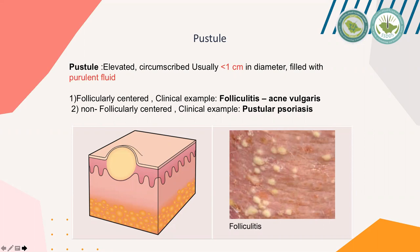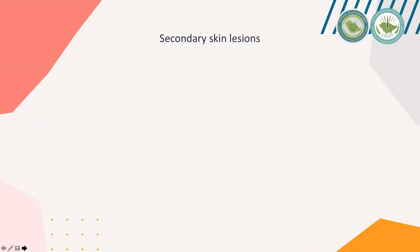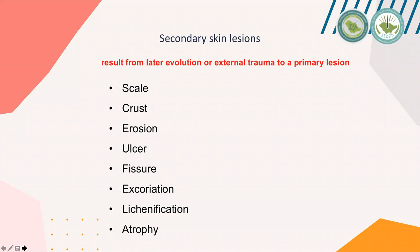After knowing the primary skin lesions, we now move to secondary skin lesions. Primary lesions are the initial manifestation of the pathological process — not altered by the three T's: time, trauma, and treatment. Secondary skin lesions are the opposite: they result from later evolution, or external trauma, or treatment of a primary lesion. Examples are scale, crust, erosion, ulcer, fissure, excoriation, lichenification, and atrophy.